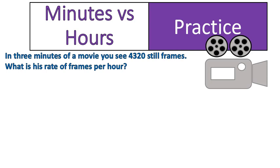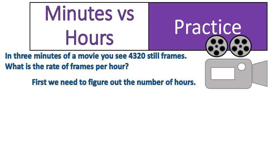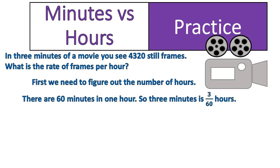Next question, and this is a practice question for you. I want you to take this question, think about it, and try it out. Pause the video and come back when you have a solution. Welcome back. In three minutes of a movie, you will see 4,320 still frames — that's true. What is the rate of frames per hour? Again, we're going from minutes to hours. So we have to first figure out the number of hours we're talking about. There are 60 minutes inside of 1 hour, so 3 minutes is 3 out of 60, or 3 sixtieths of an hour. We could simplify this fraction, but we don't need to.